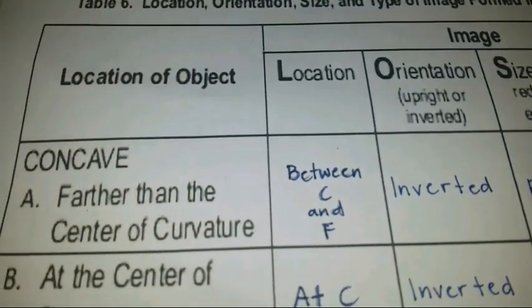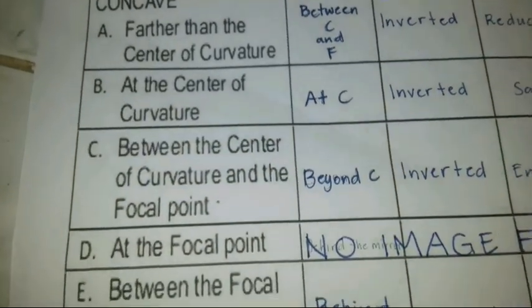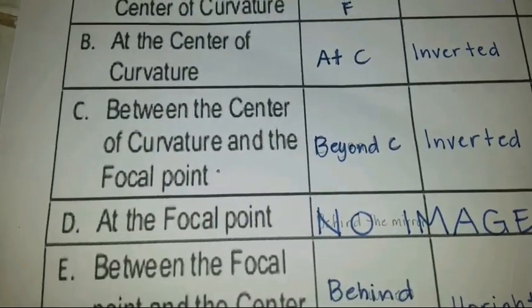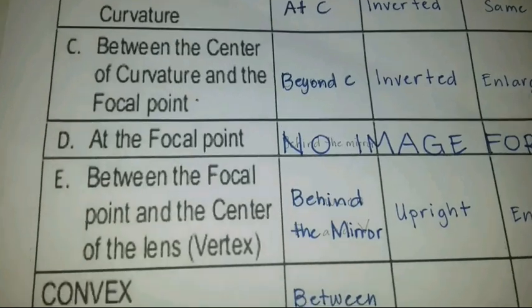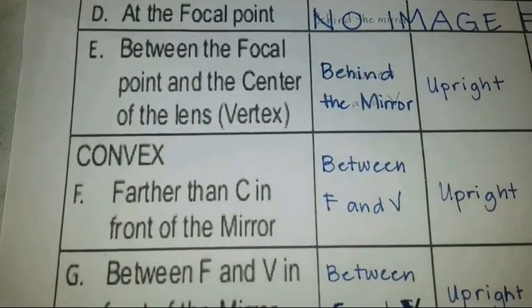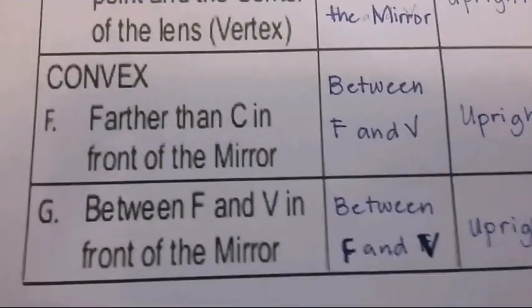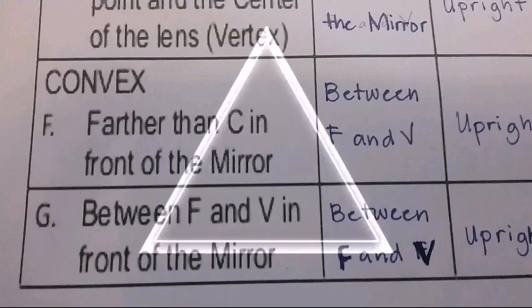The location of the image. A. Between C and F. B. At C. C. Beyond C. D. No image formed. E. Behind the mirror. F. Between F and V. G. Between F and V.